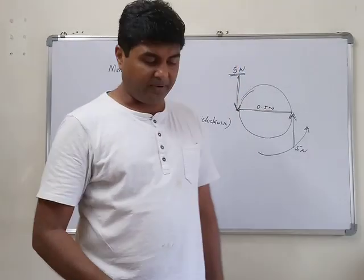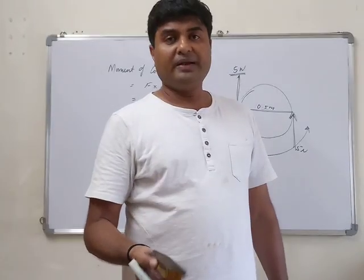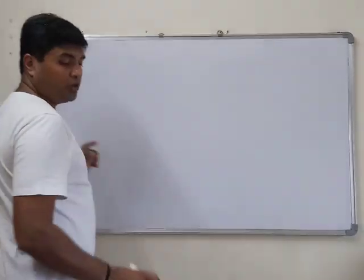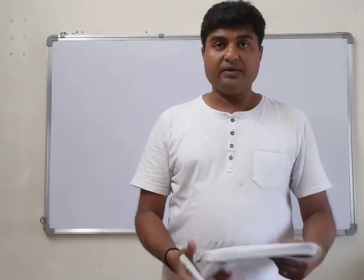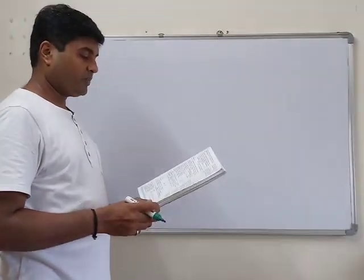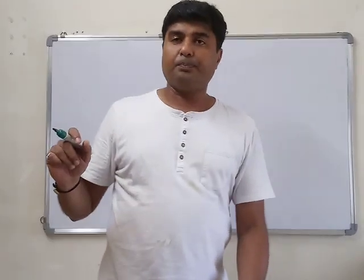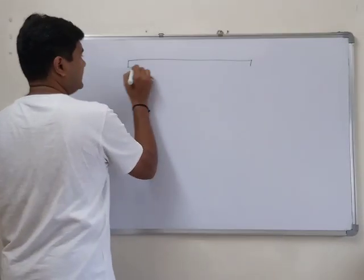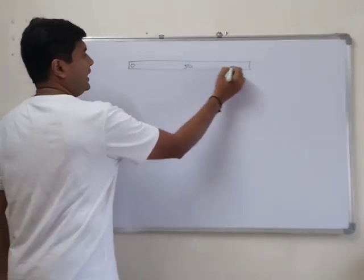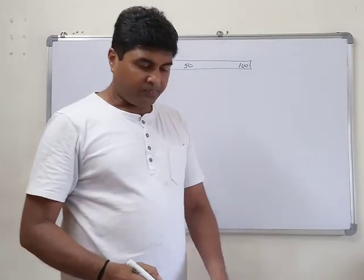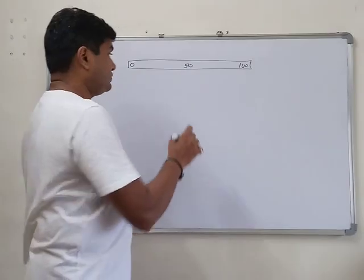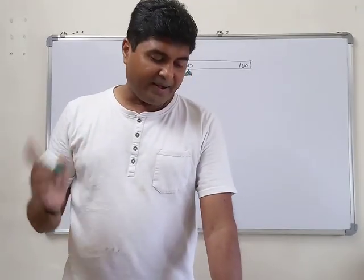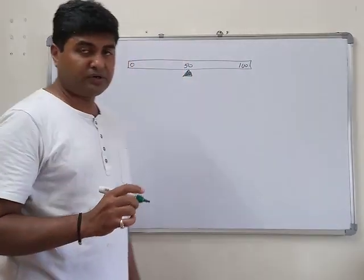Now moving to the important uniform meter rule problems — these types of questions are commonly asked in exams, so pay close attention. A uniform meter rule is pivoted at its midpoint. Draw the figure: 0, 50, 100, with the pivot at 50. A weight of 50 gf is suspended at one end.